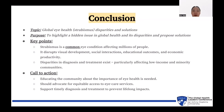In conclusion, my topic was global eye health, especially Strabismus disparities and solutions, with the purpose of highlighting a hidden global health issue and proposing solutions. Key takeaways are that Strabismus is a common eye condition affecting millions, disrupting visual development, social interactions, educational outcomes, and economic productivity, with disparities particularly affecting low-income and minority communities. The call to action is to educate communities about eye health, advocate for equitable access to eye care services, and support timely diagnosis and treatment to prevent lifelong impacts.